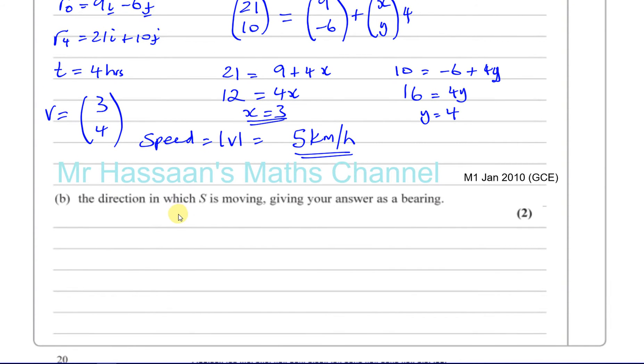Then it says give the direction in which S is moving as a bearing. We just kind of made a little diagram, but I'll do it again. You know that the velocity is 3, 4, so that means for every 3 across to the right, it's going 4 up. This is horizontal, this is vertical. So you can make a little diagram. They want to find the direction as a bearing. Bearings are always measured from the north line and always measured in the clockwise direction.